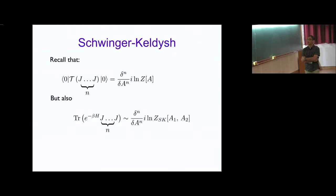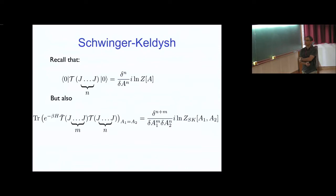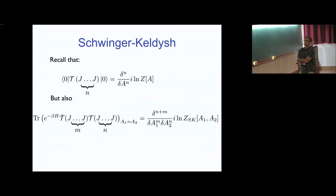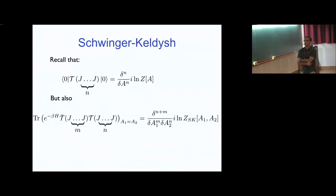In the vacuum generating function we get time-ordered correlation functions. In Schwinger-Keldish theory, for every operator we don't have one source but two sources — a technical feature needed to deal with the fact that the initial state is a density matrix. If we do m variations with respect to source one and n variations with respect to source two, then set the sources equal, we get an anti-time-ordered set of operators times a time-ordered set in thermal equilibrium.